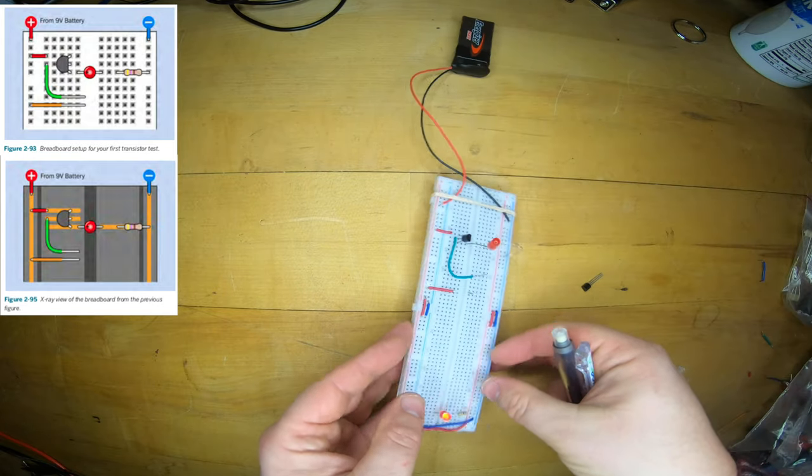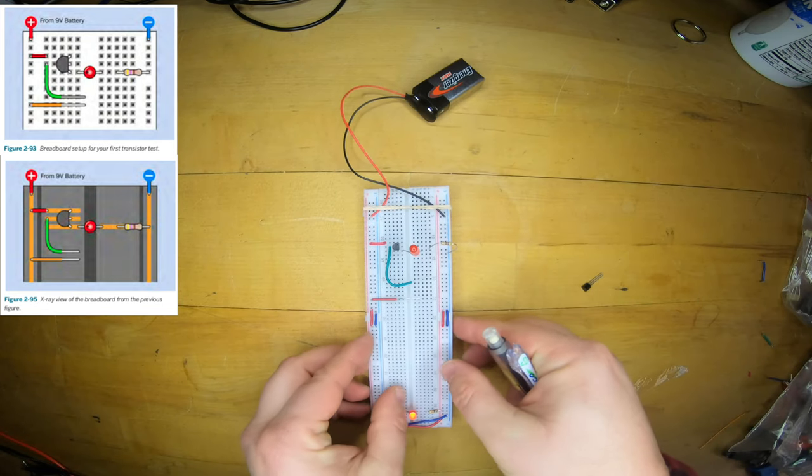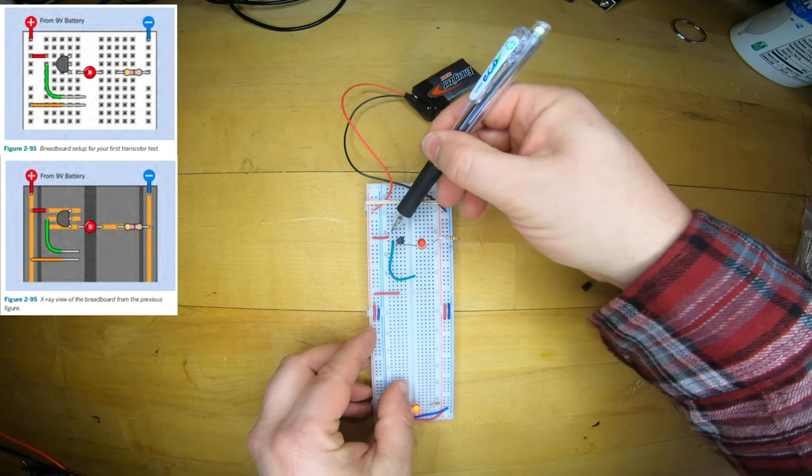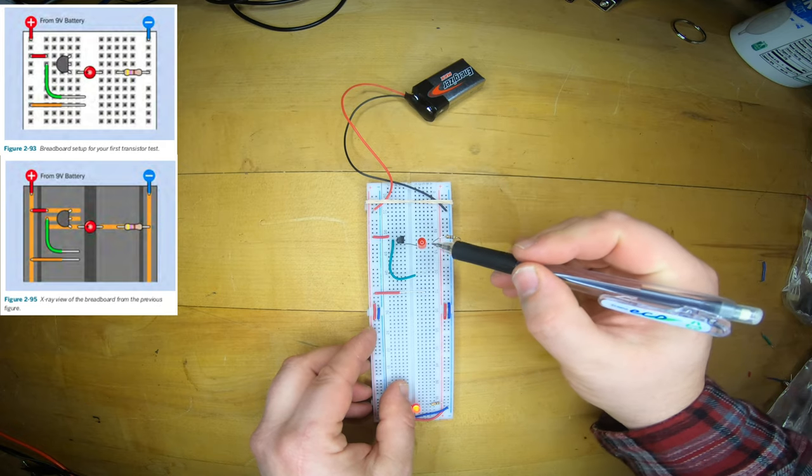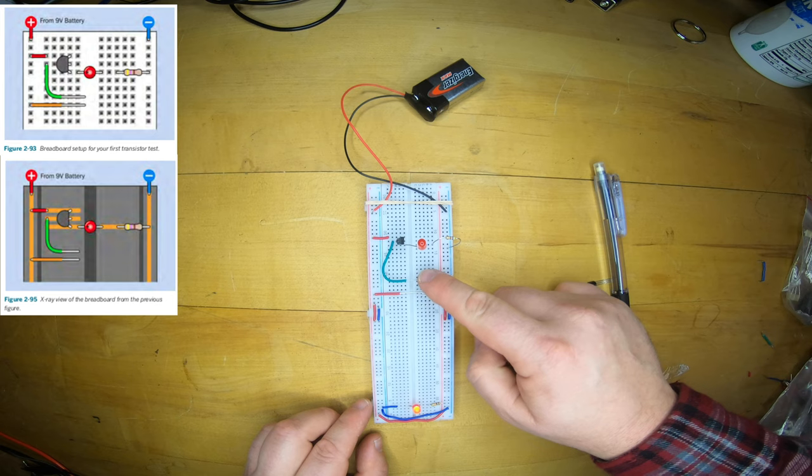I usually stick transistors in three adjacent holes in the circuit board as shown here. In this particular circuit, when the switch is activated, we'll show you how in a moment, current will flow through the LED and resistor lighting it up.